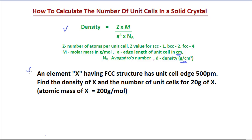The problem says that an element X has an FCC structure. From this information we can get the Z value. Z value for FCC — face-centered cubic — structure is 4. So here we get Z is equal to 4.